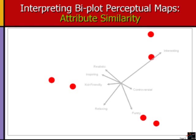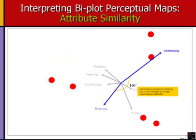Attribute correlations or similarities are indicated by the angles between attribute vectors. Directionally parallel vectors are very similar in terms of how brands distribute among them. For instance, realistic and inspiring point in nearly the same direction, having a very small angle between them, which means viewers rate TV shows quite similarly with regards to these two attributes. If a TV show is realistic, it's highly likely to also be seen as inspiring. In a similar fashion, attributes pointing in nearly opposite directions are still highly related but in an opposing way — they form the opposite ends of a single dimension. For instance, the interesting vector and relaxing vector point in essentially opposite directions, indicated by a large angle of 166 degrees. Shows that tend to be interesting do not tend to be relaxing and vice versa.